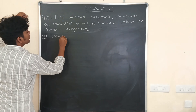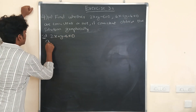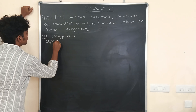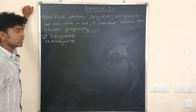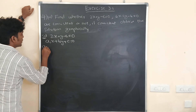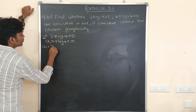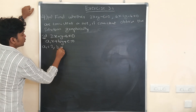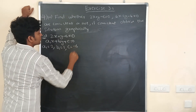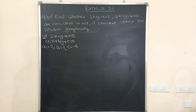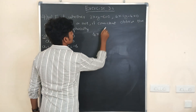The first equation is 2x + y - 6 = 0. Let us consider this as a1x + b1y + c1 = 0. By comparing: a1 is equal to the coefficient of x, that is 2; b1 is equal to the coefficient of y, that is 1; and c1 is equal to the constant, minus 6.